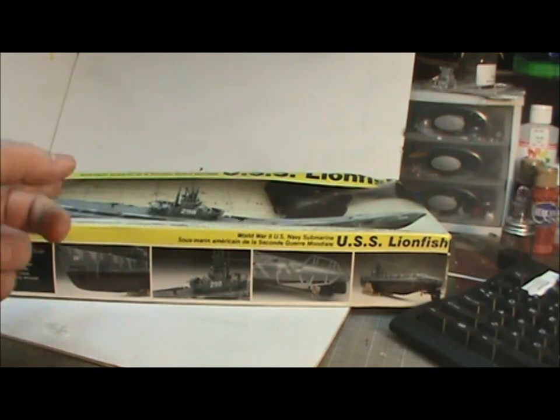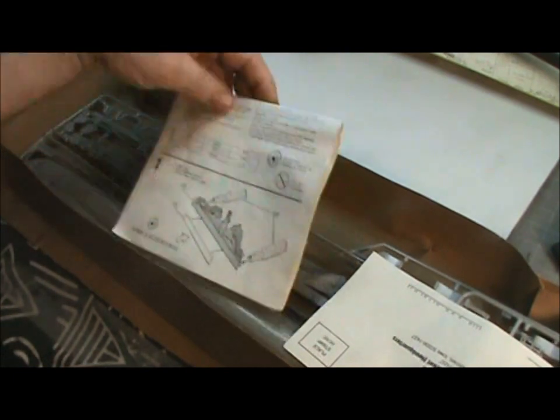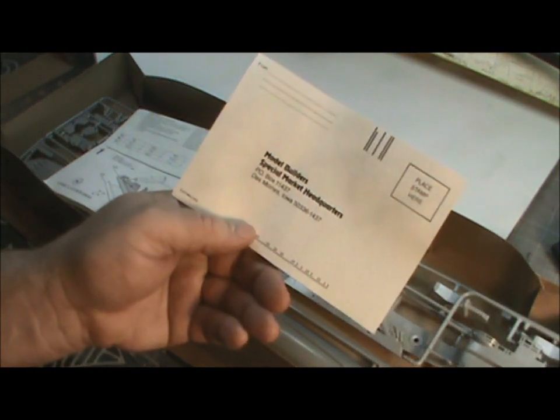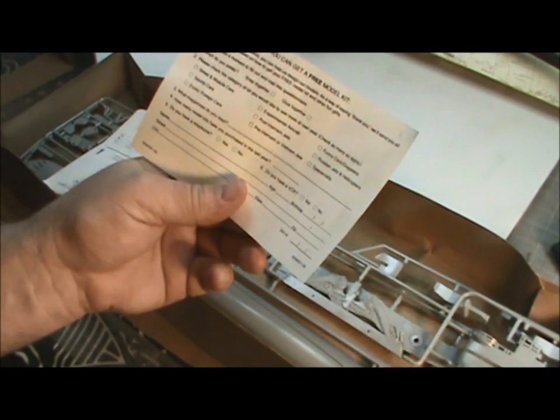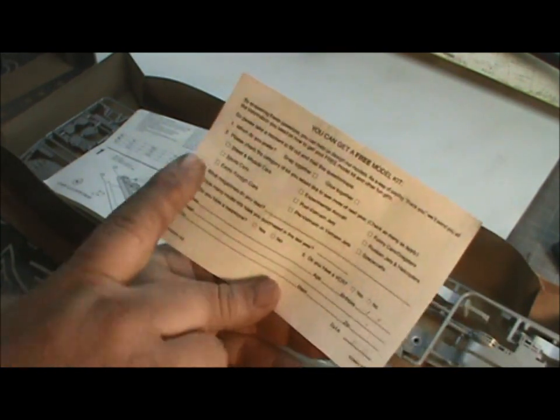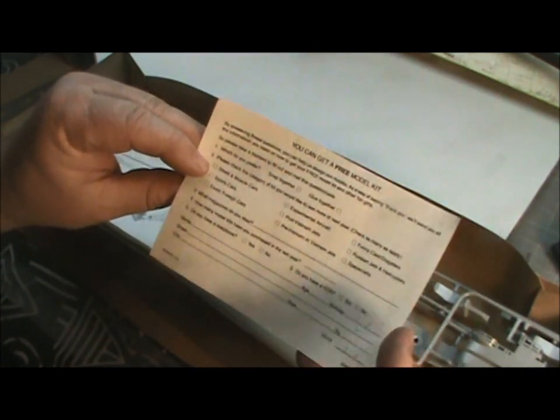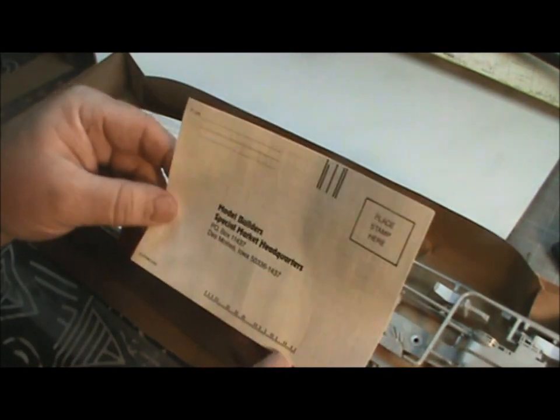Let's pop this sucker open, and let's see what's inside. As we look inside the box, we've got a little bit of paperwork. We've got a little bit of propaganda here from the model builder, special market headquarters. So I guess fill out this survey, and you can get a free model. Just don't select the option on here, whether you're a citizen or not, you're going to get in trouble. Very racist. But no, just kidding. But yeah, just a little bit of a survey here, and you have your chance to win a free model. I wonder if I should fill that out, what would happen with it.